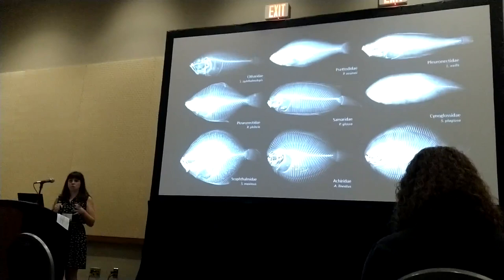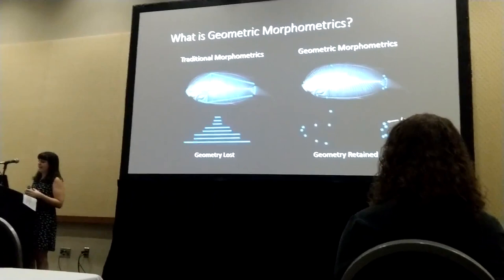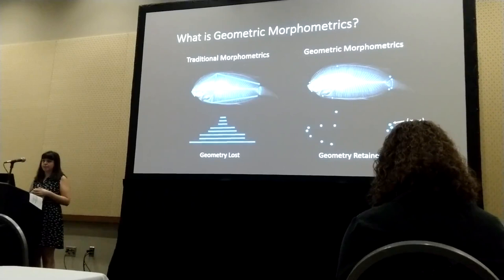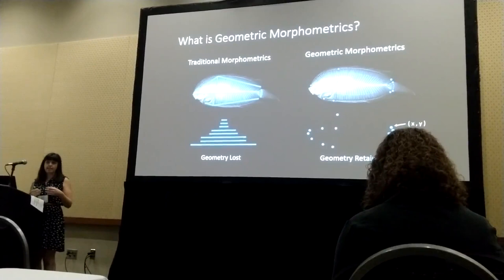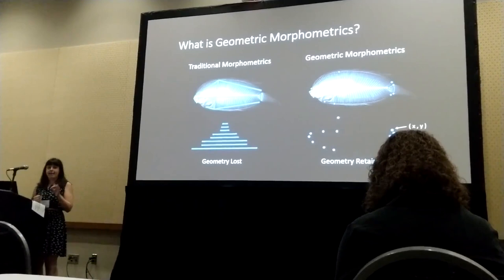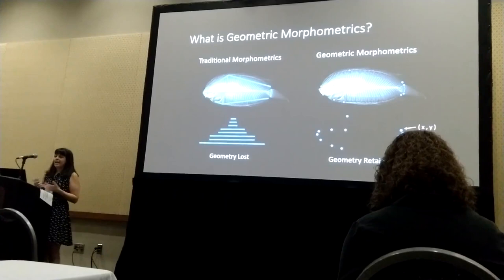So what we wanted to do for this study was look at morphological variation across the flatfishes using a method called geometric morphometrics. For those not familiar with it, this is a method you can use to analyze shape while retaining geometry. Traditional morphometrics typically takes linear measurements from one point to another, and when you analyze those, you tend to lose the geometry of the specimen. In geometric morphometrics, we use homologous landmarks, which each have their own x-y coordinate, allowing us to retain the geometry.